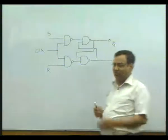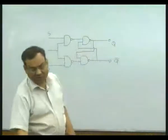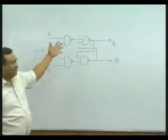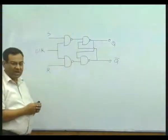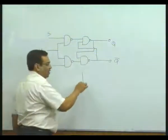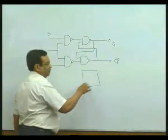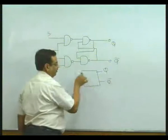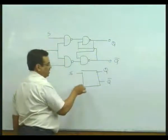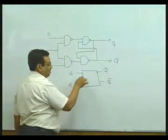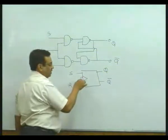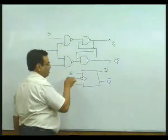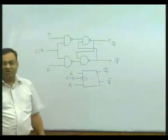And the symbol for this particular type of circuit - we won't show that complete detailed circuit all the time. But we will show a block having Q and Q bar output, having S and R input, having a notch to indicate clock and a circle to indicate negative trigger clock.